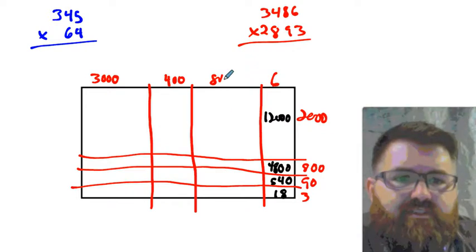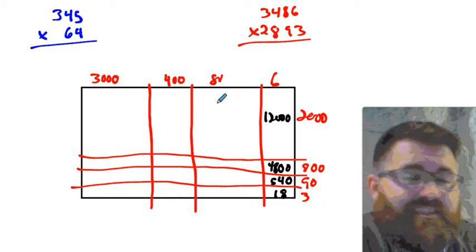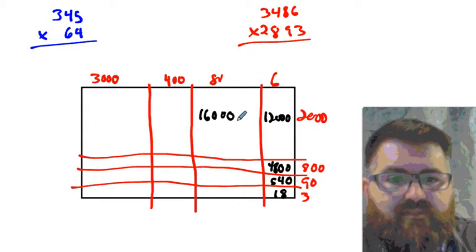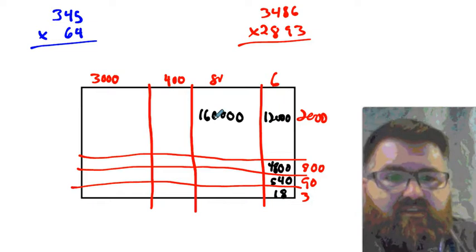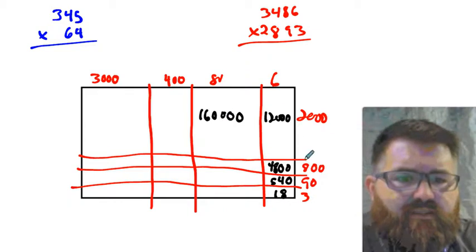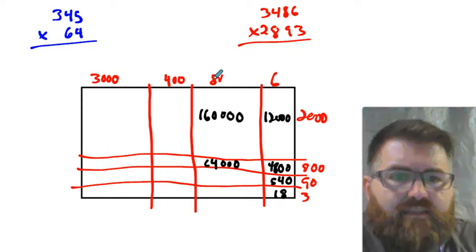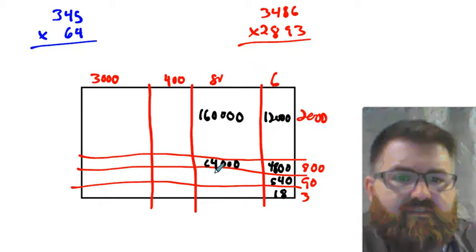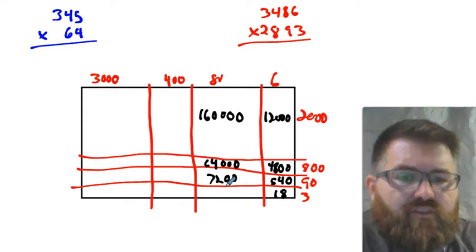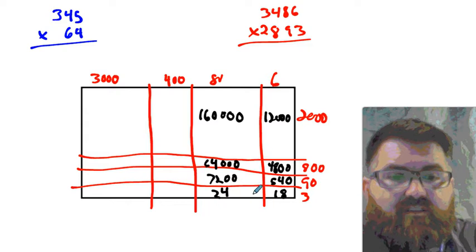80 by 2,000. 10s place by 1,000s place. That's going to be 10,000s. 8 times 2 is 16. 16 10,000s. Now, this is 16,000. It's 16 10,000s. All right. So, that's actually 160,000. That's how we would read that. 80 by 800. That's 10s by 100s. That's going to be in the 1,000s place. 8 by 8 is 64,000. 80 by 90. That's 10s times 10s. That's going to be 100s. It's going to be 8 times 9 is 72 100s. That's 7,200. 10s by 1s. That's going to be 10s. 80 by 3. 8 by 3 is going to be 24.